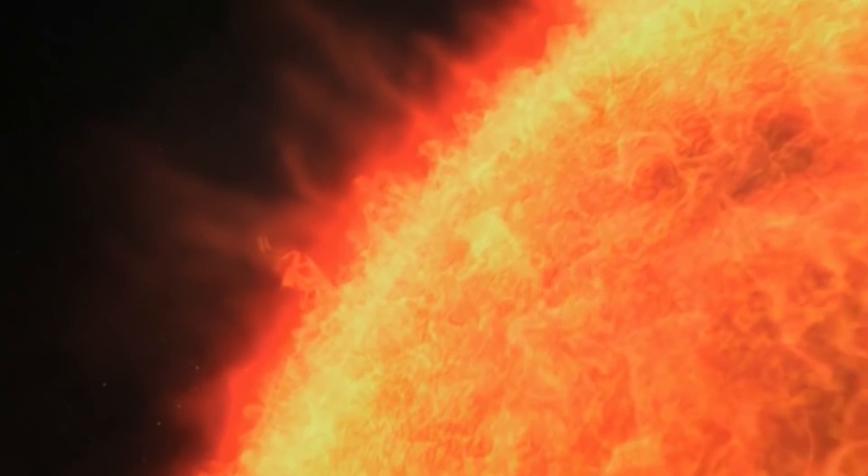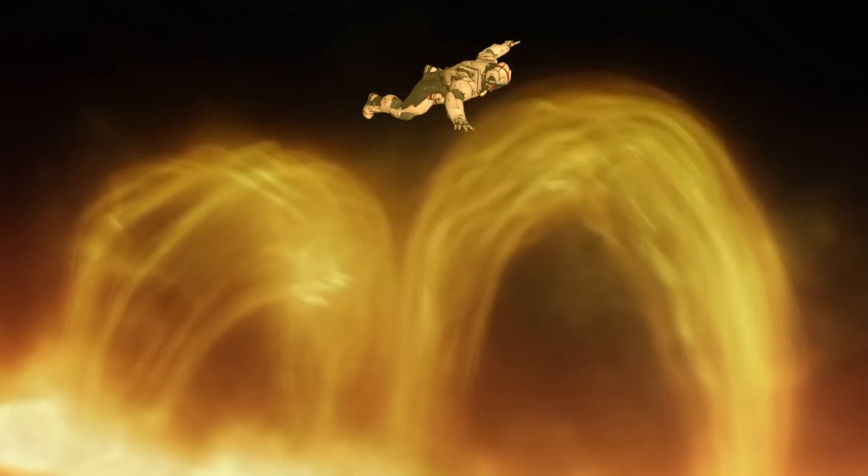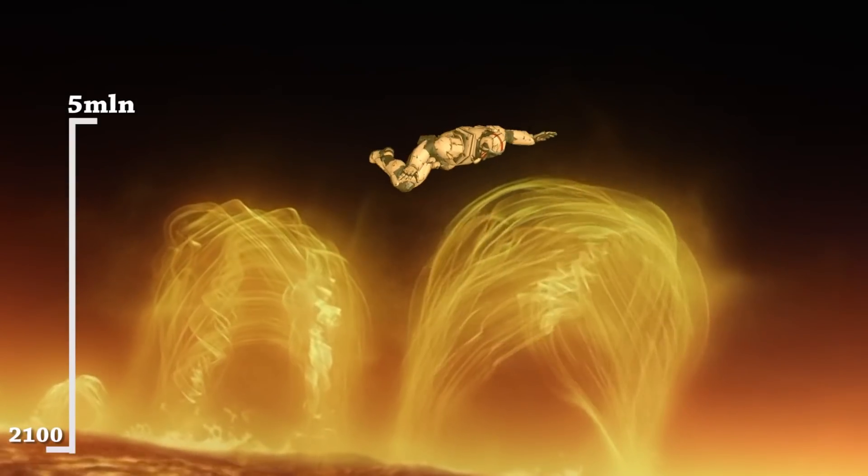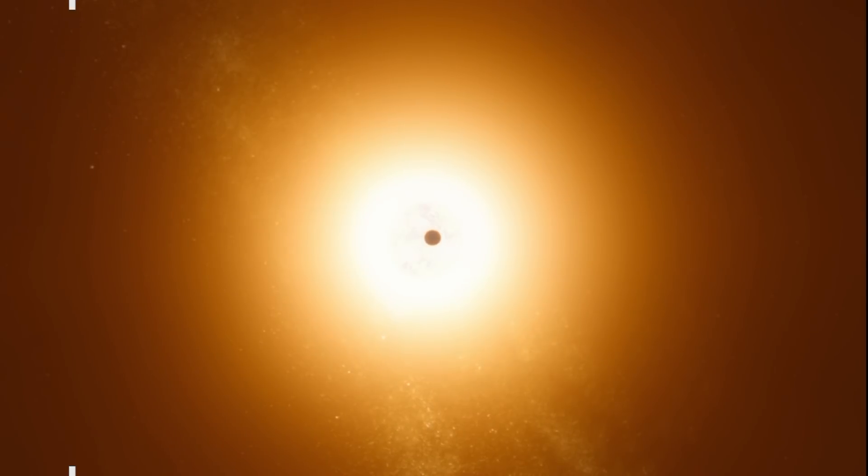No need to worry about oxygen when you're about to go through one of the Sun's layers. At this point, you approach the corona, the outermost region of the Sun, starting out at 2,100 kilometers above the surface and extending out to some 5 million kilometers.